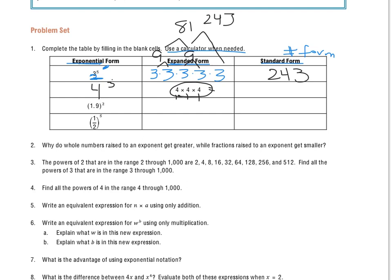Looking at the fourth one, we see that we have 1 half to the fifth power, meaning 1 half times itself 5 times. I know that all the 1's across the top — 1 times 1 times 1 times 1 times 1 — is going to give me 1, because anything times 1 gets itself. Now for the denominator, this is not 2, 4, 6, 8, 10 — I'm not adding by 2 each time, I'm multiplying. 2 times 2 is 4, 4 times 2 is 8, 8 times 2 is 16, and 16 times 2 is 32. So that's going to get me 1/32 as my standard form.